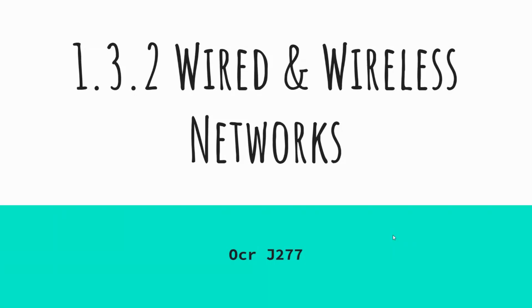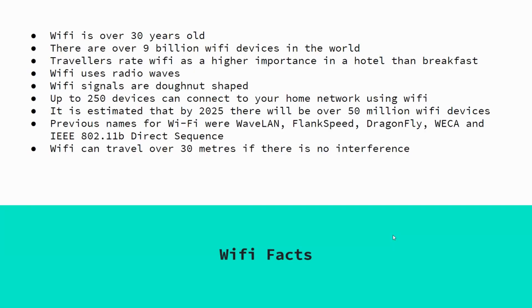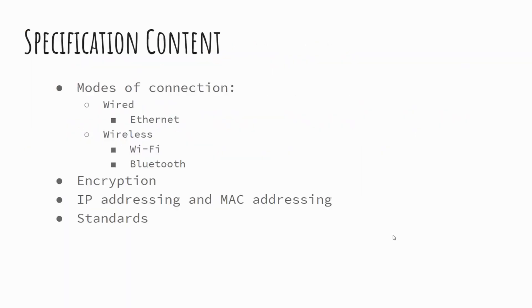We're going to look at wired and wireless networks. The specification content covers wired connections and wireless connections, encryption, what IP addressing and MAC addressing are, as well as the standards that surround computing.